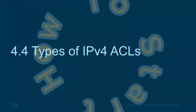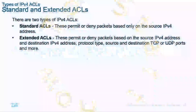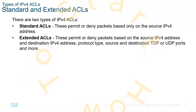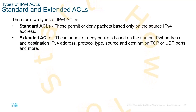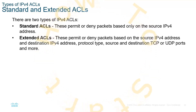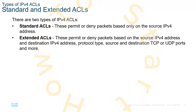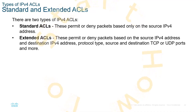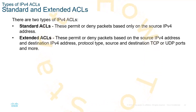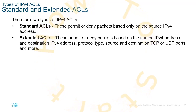Lastly, types of ACLs — they're standard and extended. There are way more than just these two, but these are the more common two IPv4 types. Standard: permit or deny based off the source. Extended: deny or permit based off the source, the destination, protocols, source and destination ports, and so much more.